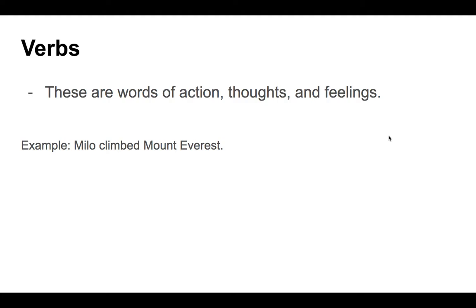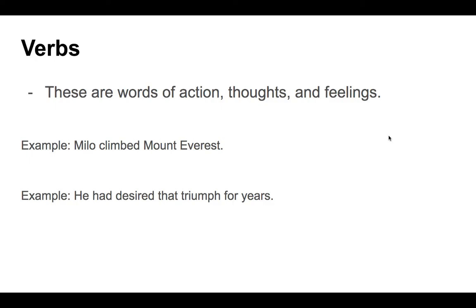One of the interesting things about verbs is that they describe action but they also tell us about time — when something happens in terms of a frame of time. So you can have present tense, past tense, or future tense. In English, there's a very wide array of different verb tenses. For example, 'He had desired that triumph for years.' If you said 'had desired,' you'd be correct. Often what I call the verb complex or verb structure will include more than one word, especially with more complicated verb tenses — you might need two or even three words as part of that verb complex.